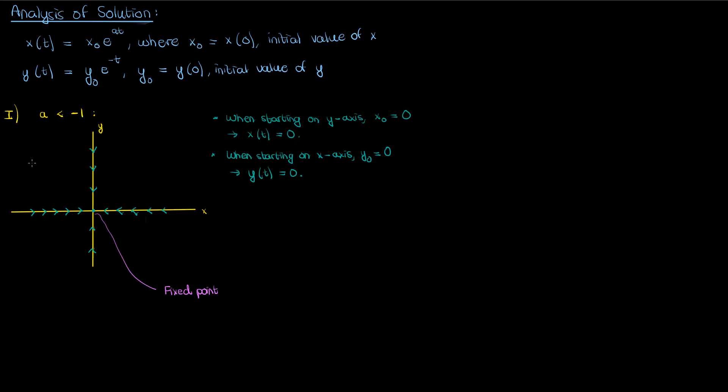Here's the interesting part though. What if we don't start at either of the axes — like if we start somewhere up here? Well, in that case because a is less than negative 1, x is going to approach zero faster than y. Think about it: I've got the exponential of negative 2t or negative 3t. It should make intuitive sense that the exponential of negative 2t or negative 3t will approach zero more quickly than the exponential of negative t. This means that on the phase portrait this point is going to be attracted to x equals zero more quickly than y equals zero — that is, it's going to be attracted to the y-axis more than the x-axis. So the trajectory of this point will have a stronger force pulling it horizontally and a weaker force pulling it vertically. If I complete this trajectory, this is what it'll look like, eventually converging to the fixed point at the origin.